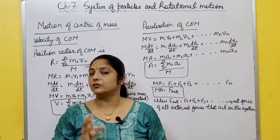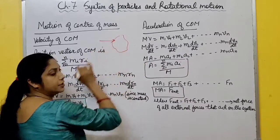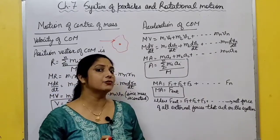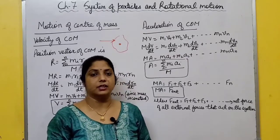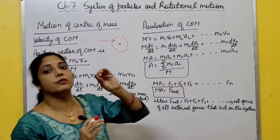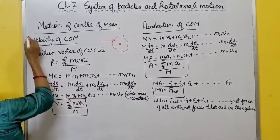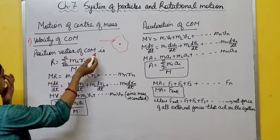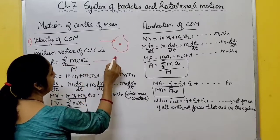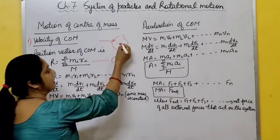When you apply force on any rigid body, that body starts moving. Newton's law is valid for point masses only. So when you apply force on a rigid body, that force acts at the center of mass - because at center of mass the whole mass of the body is concentrated. The position vector of center of mass is R = Σmᵢrᵢ / M.